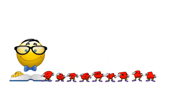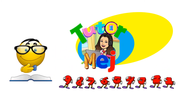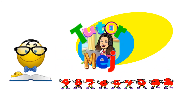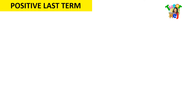You are watching True Term Edge! Let us study how to factor out a square trinomial with a positive last term. For example, we have here 4x squared plus 12x plus 8.